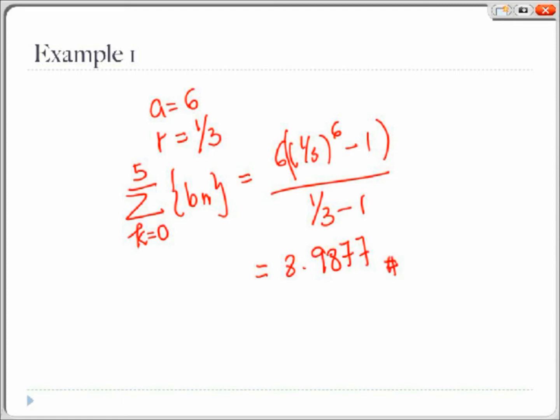So if we want to compute the infinite series of b_n, we have to use a different formula, which is the summation from k equals 0 to infinity, and that equals a over 1 minus r. So we get 6 over 1 minus 1 third, which equals 9. From the answers to both summations, we know that the sequence converges to 9 and very quickly.